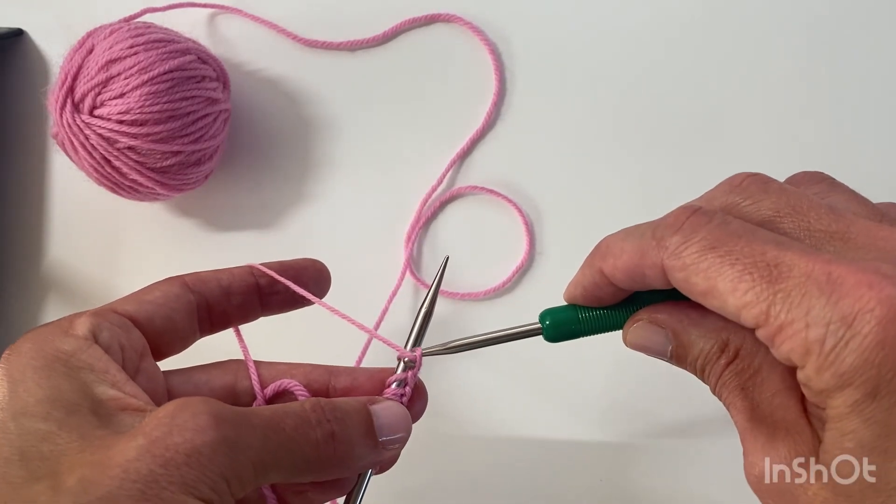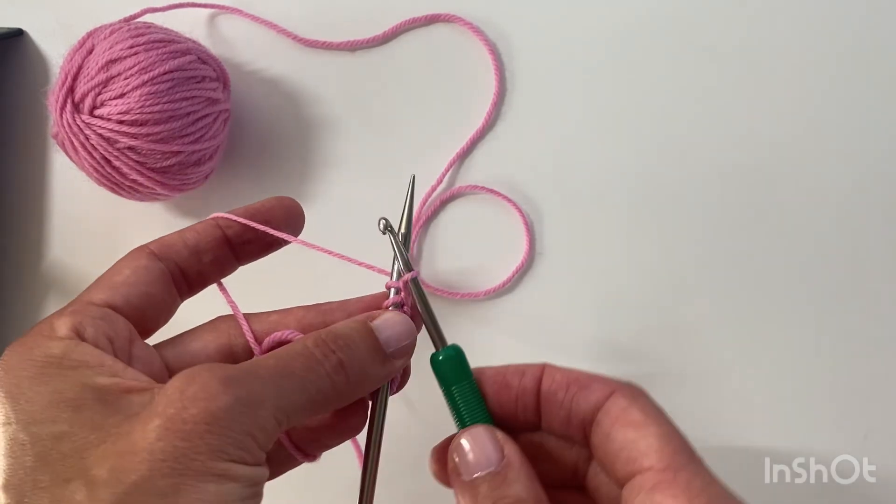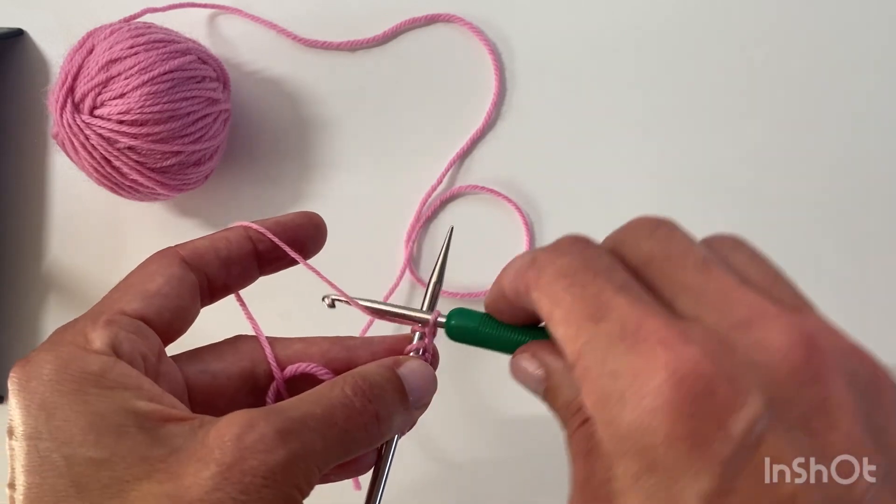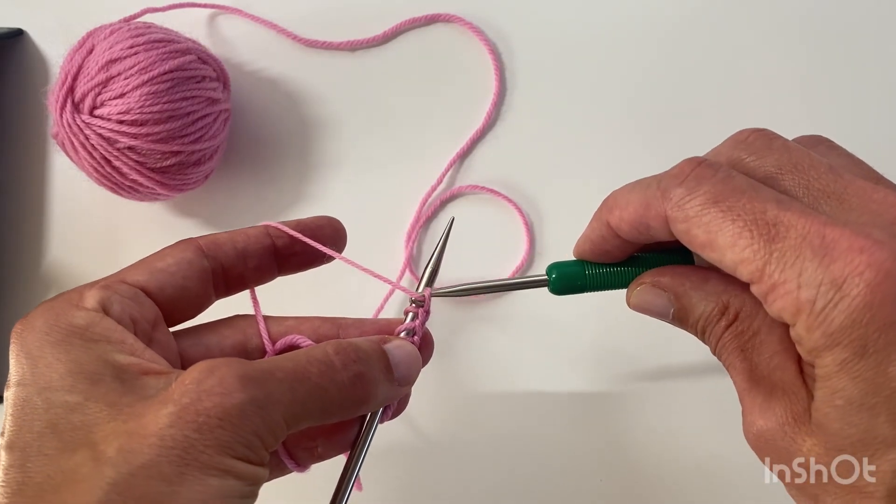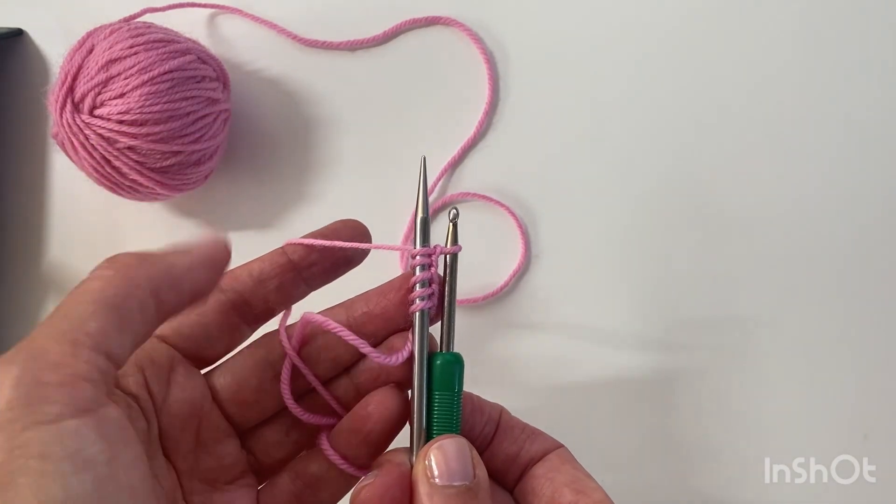For this purpose I'm casting on, I need to cast on 10 stitches. So the crochet hook goes over and collects the yarn, you pull through the loop, pass the yarn to the back. So I've got five.